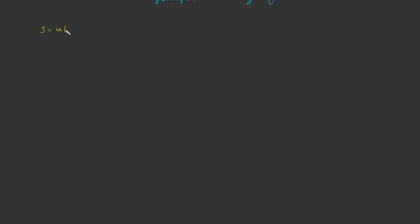Let us check the dimensional consistency of the equation s equals ut plus half at squared. We are going to find the dimensions of each term. First, we take the LHS, that is the dimension of S. The dimension of S is L, because S is the distance, measured by the base physical quantity L. So the dimension of S is simply L.